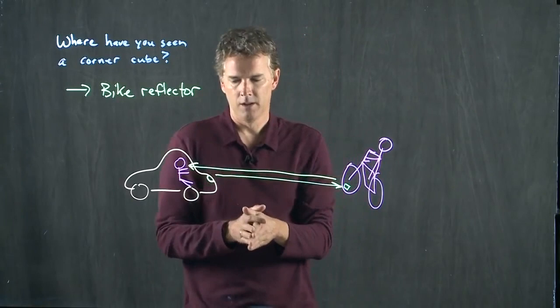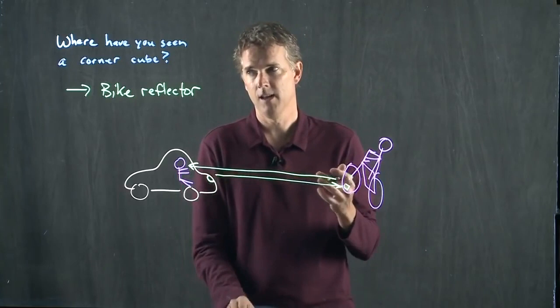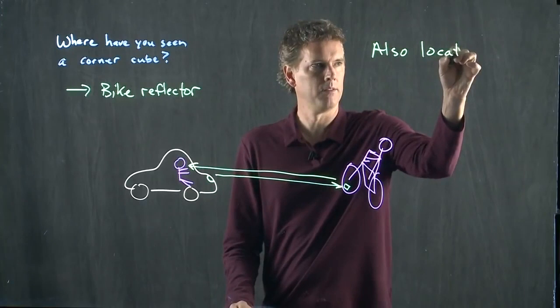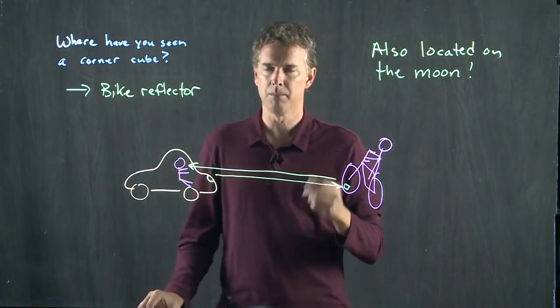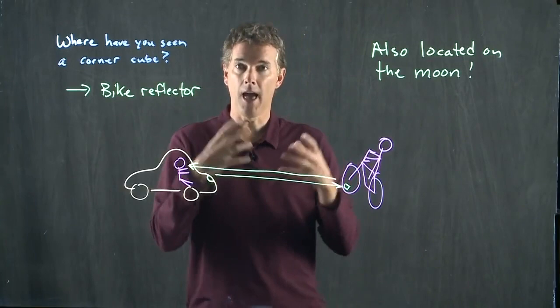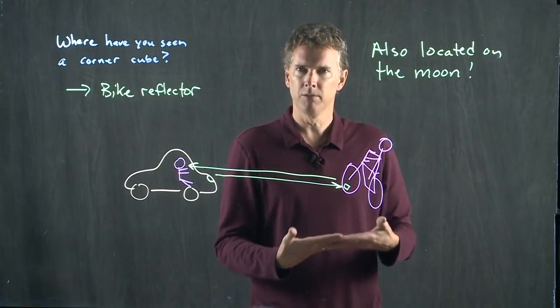So there's one more place where corner cubes are located, and this is very exciting. They are located on the moon. Way back in the early 70s, the Apollo astronauts went up to the moon, right, when we went to the moon. And they brought a whole bunch of mirrors with them. They brought a whole bunch of corner cube reflectors, and they put them on the surface of the moon. And the idea was, we're going to use these someday for something important. And guess what? We are using them today for something important.